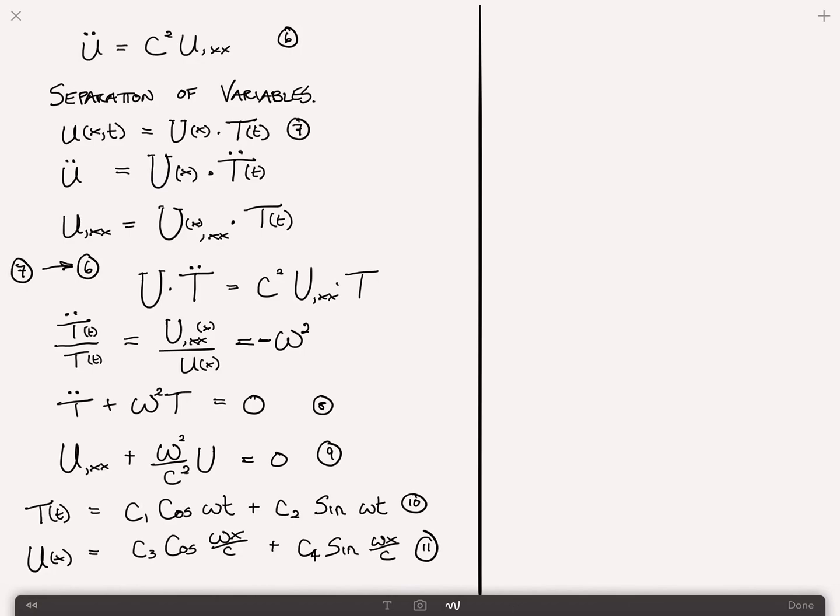For each one of these equations, we need two conditions. In the case of the time-dependent equation, it would be the two initial conditions, the displacement field or velocity field initially. And in the case of U, it would be your two boundary conditions at x equals 0 and x equals l. Your initial conditions are u of x comma 0 equals u0 and u dot of x comma 0 equals v0. In general, u0 and v0 are functions of x.